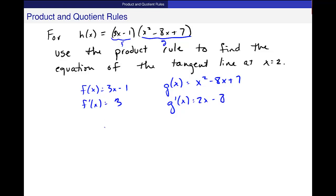And then I use the product rule which is that h prime should be f g prime plus g f prime. So let's see, I'll put in f, 3x minus 1, and g prime, plus g, x squared minus 8x plus 7 times 3.